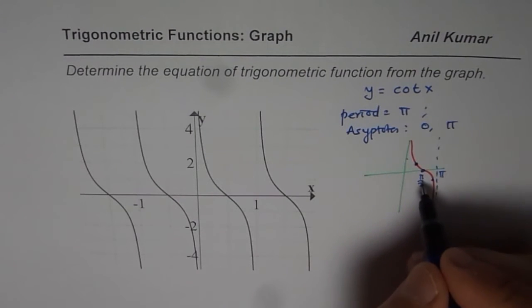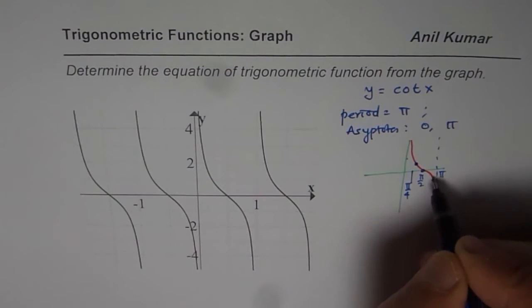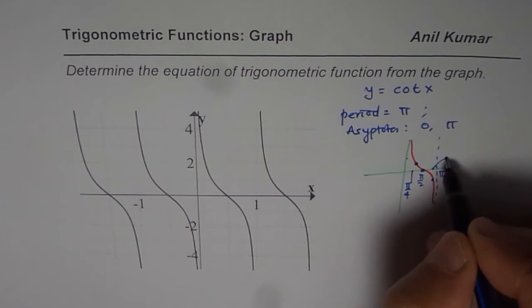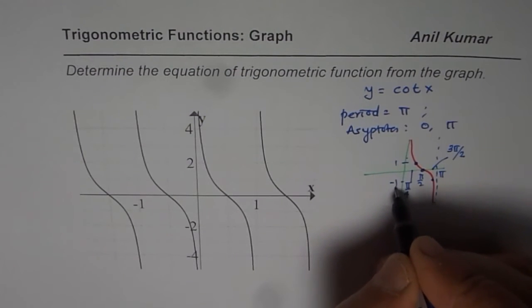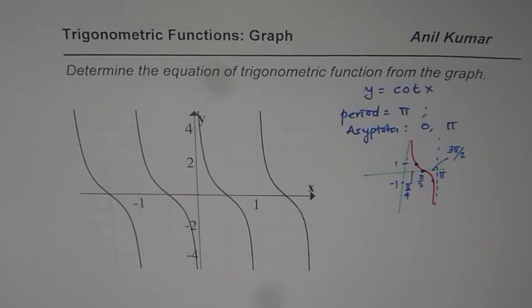Now at π by 2, the value of the function is 0, but at these two points, which is π by 4, quarter of the cycle, and this point is at 3π by 4, the value is 1 and minus 1 respectively. So these are the three points which we should be checking for vertical or horizontal stretch or compression.